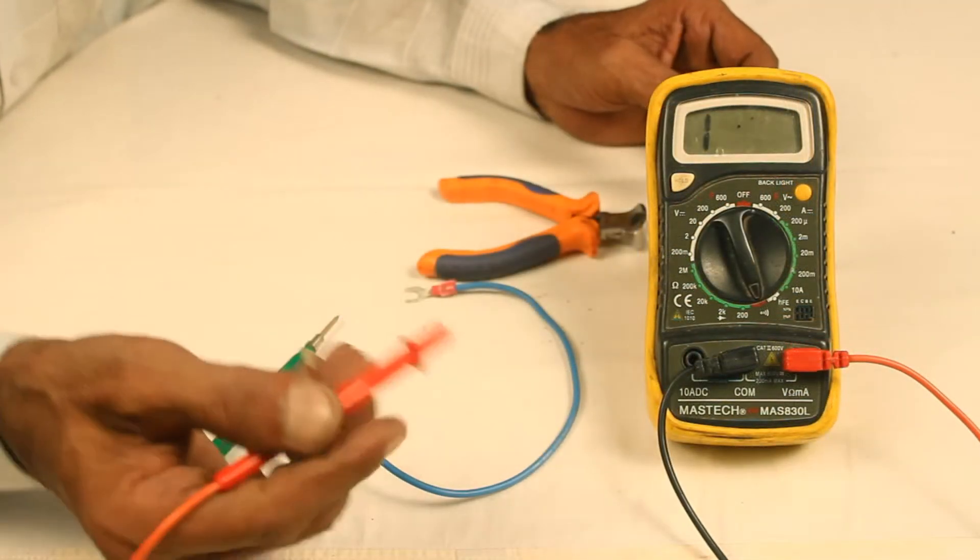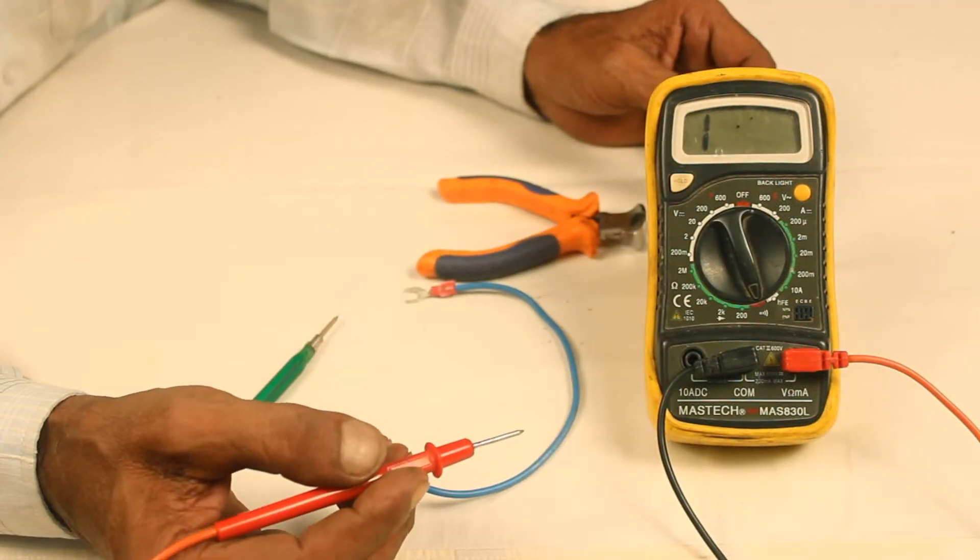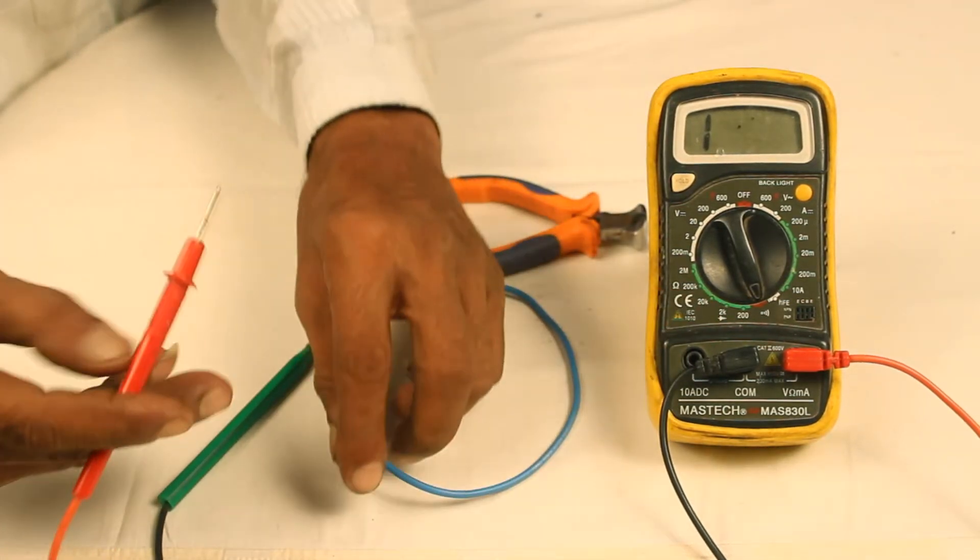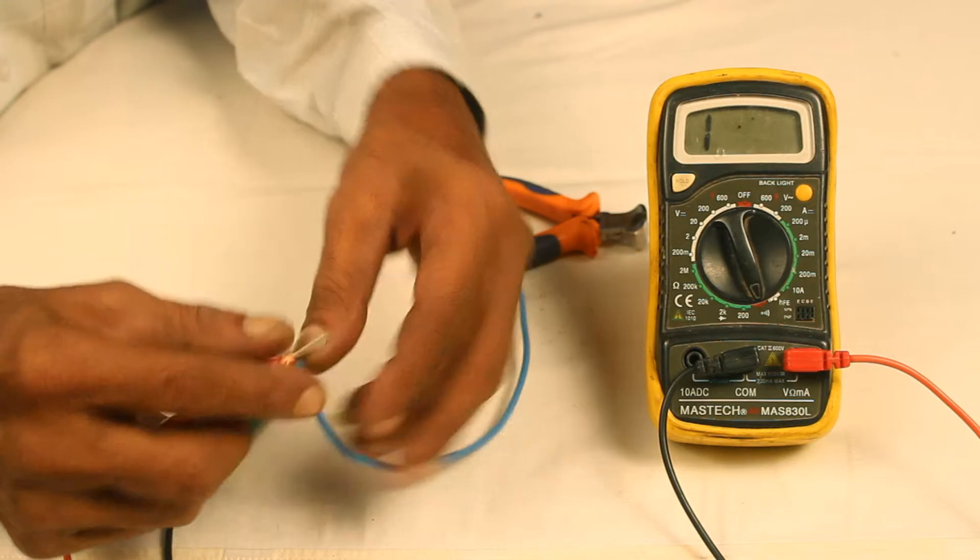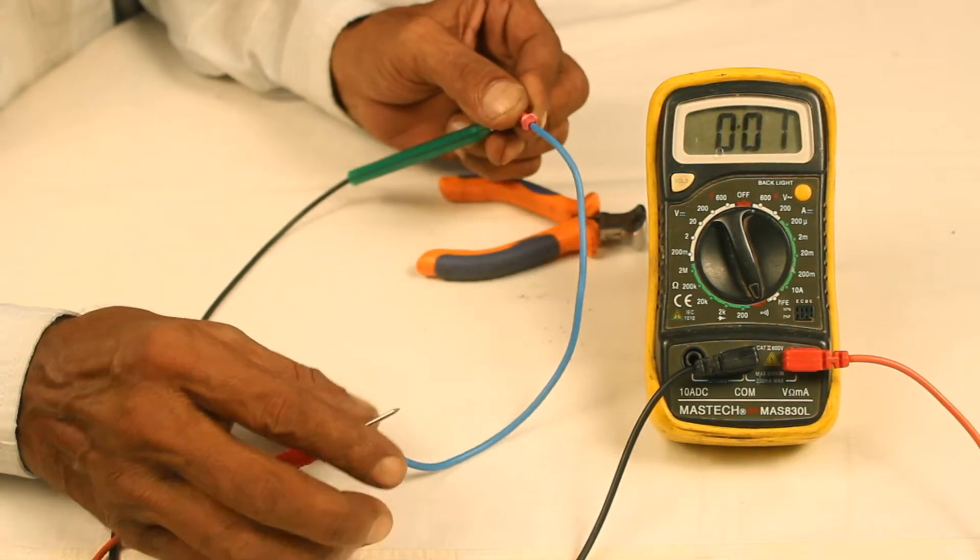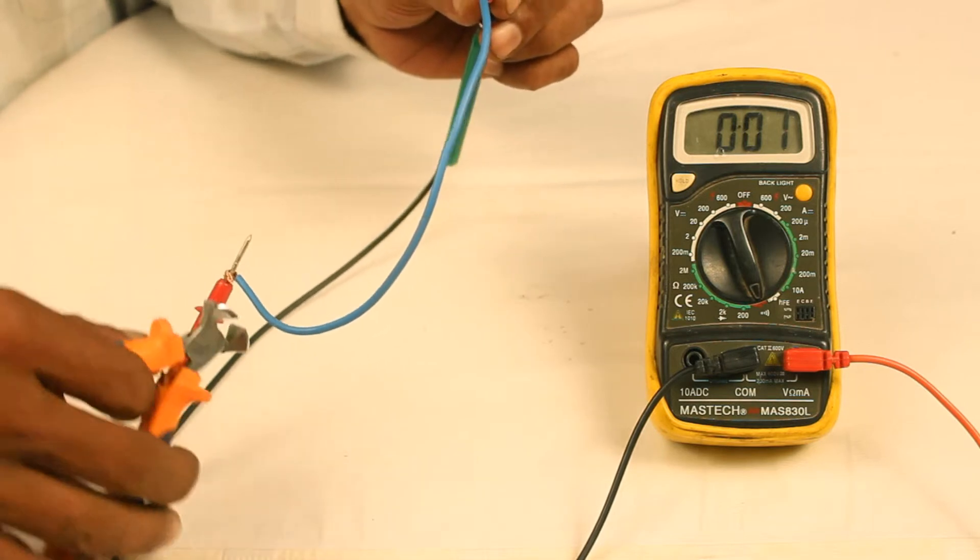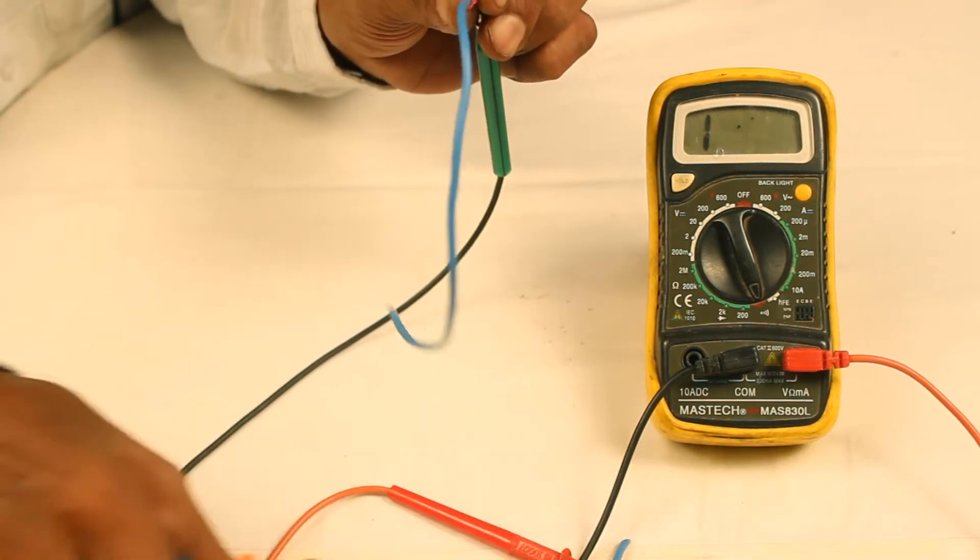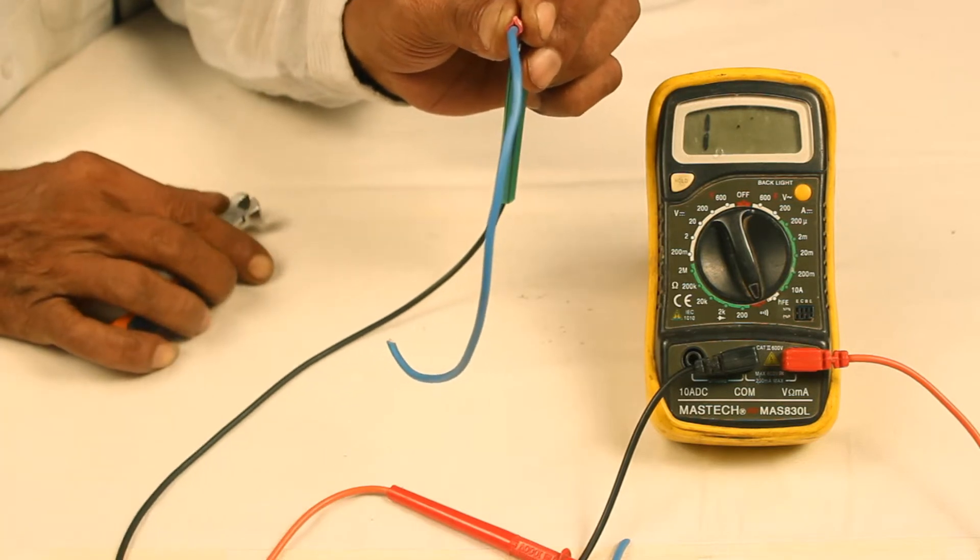The multimeter can also be used to check the continuity of a cable. You turn the selector to buzzer mode, connect the probes to each end of the wire and the buzzer comes on. Now, if I cut the wire, the buzzer stops indicating there is a break.